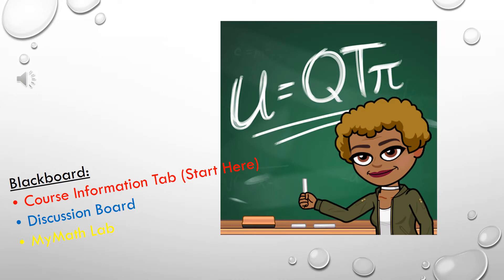To get started for this course, you will click on the Course Information tab, which you will find in Blackboard, and you will review all of the information in the Start Here folder. You will then click on the Discussion Board tab, where you will find the Faculty Expectations, which you will need to read and reply, and you will also need to do a personal introduction to the course, as well as add a picture.